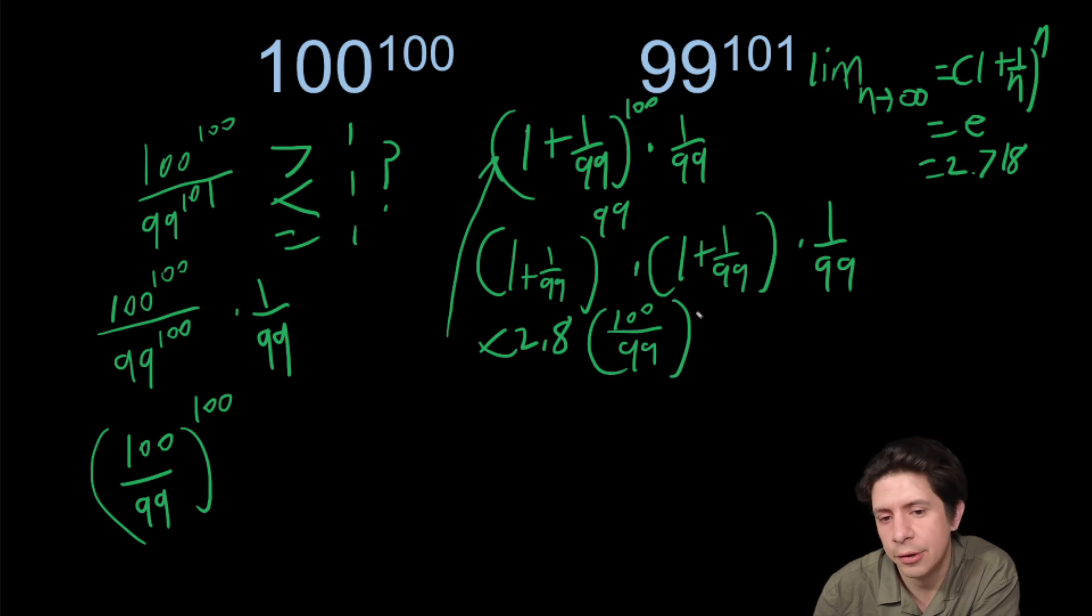So right now we're still above 2, but we have times one over 99. So even if this and this multiplied, let's say this was 3, right?